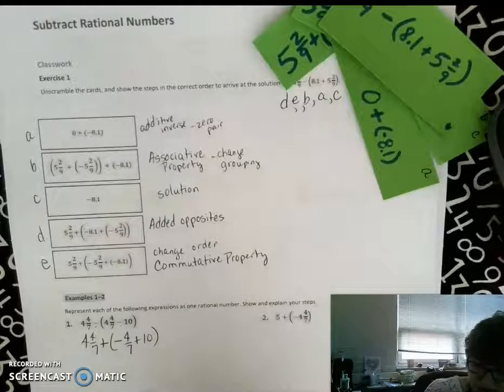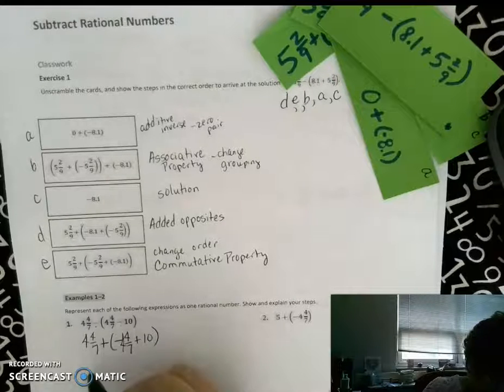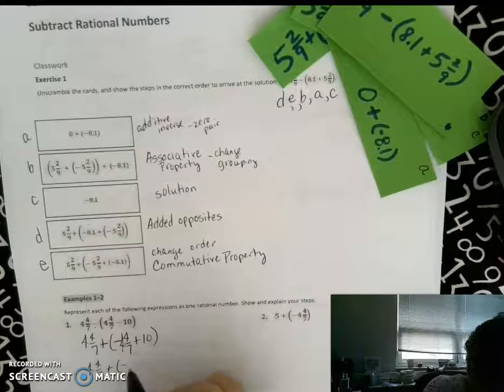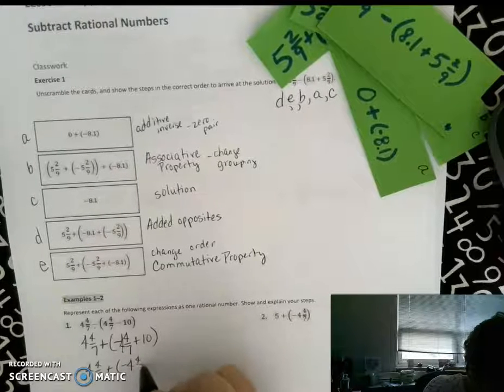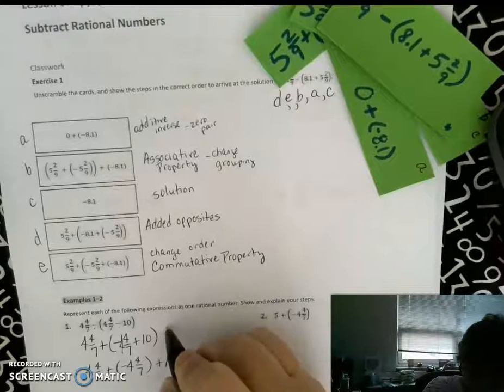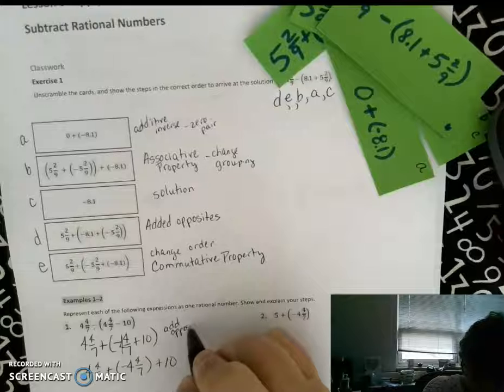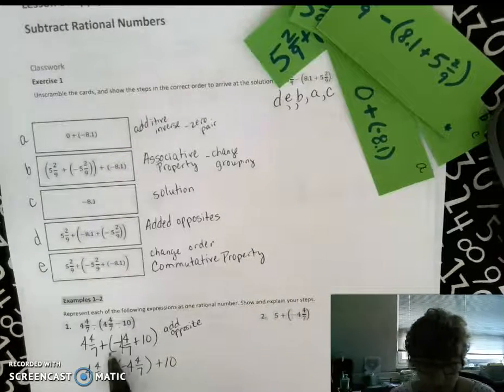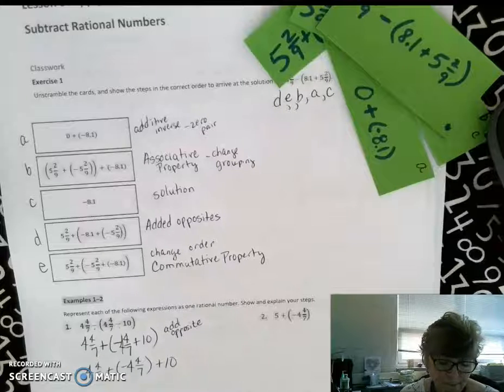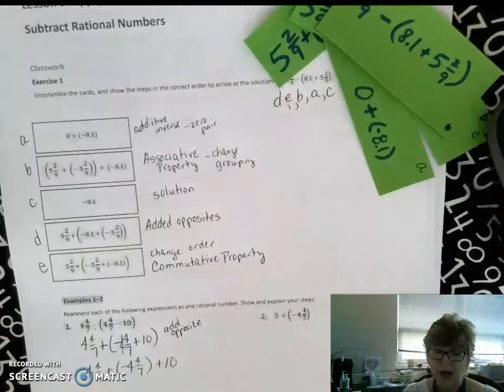You could also write that as, excuse me, I left the four off. So we added the opposite. Opposite. And remember that goes back to lesson eight where they talked about opposite of the sum is the sum of the opposite.